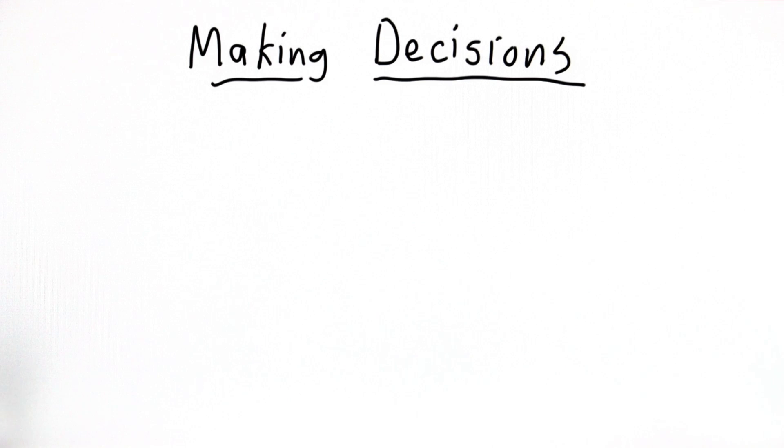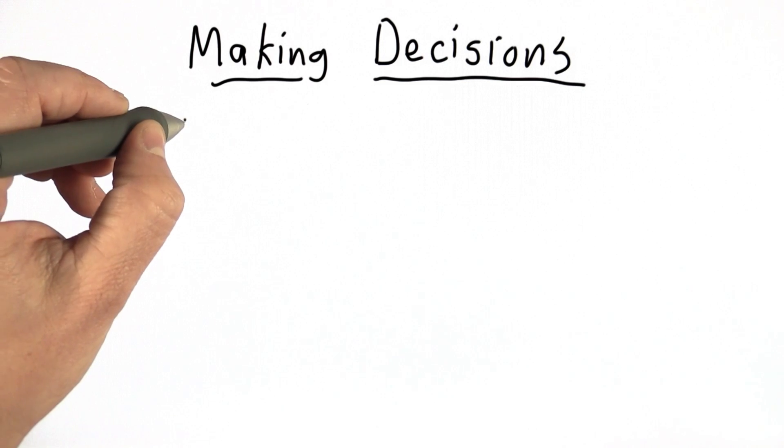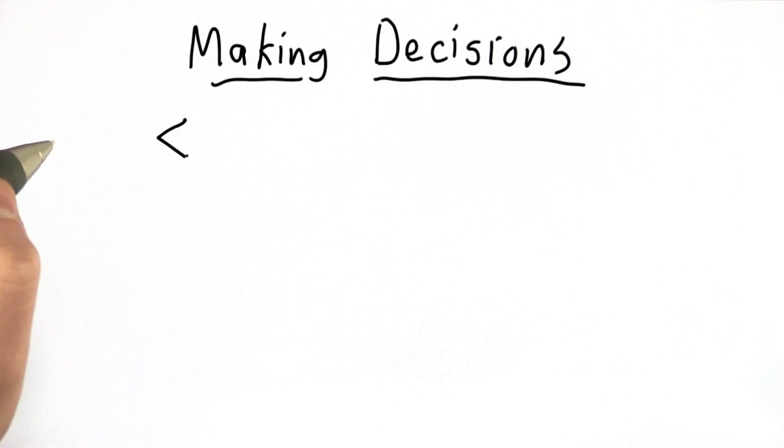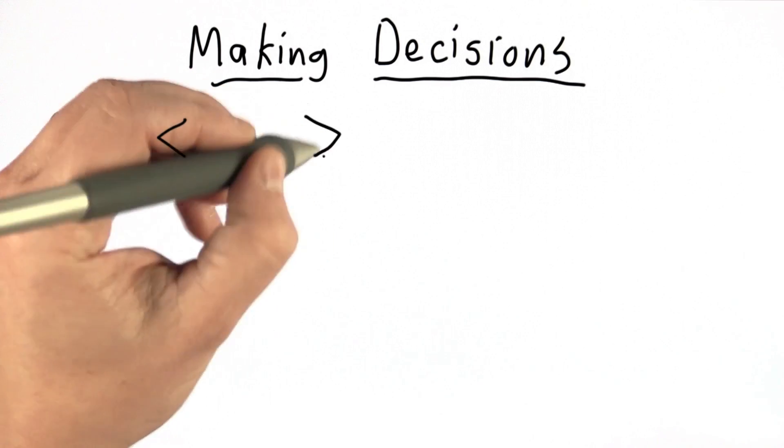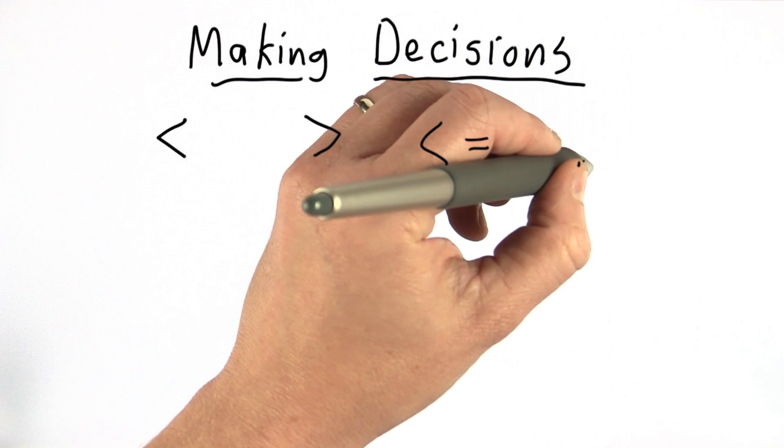The first thing we're going to do is figure out some ways to make comparisons so we have a way to test and decide what we should do. Python provides lots of different operators for doing comparisons. There are things similar to what we've used in math. We have a less than sign that compares two numbers, greater than, less than or equal to, things like this.